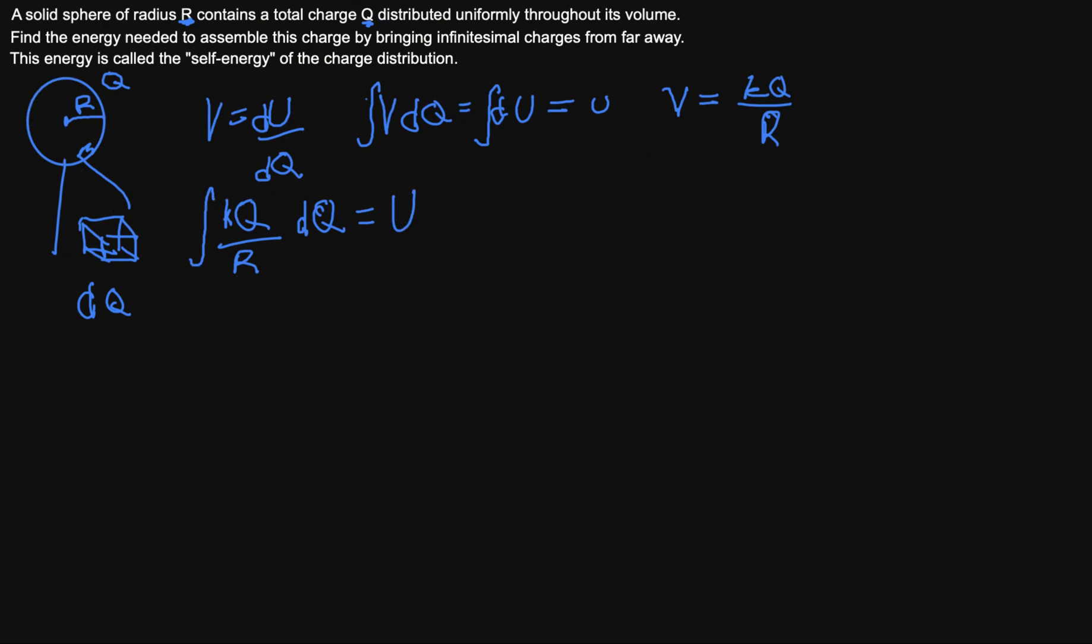So usually in these situations, what we can do is say that the volumetric density, or the surface density, the linear density, in this case, it's volumetric density, which is the charge over the volume. I'll just write vol to differentiate it from this v. We can play around with this to get something to replace our dq. And we know that the volume of a sphere is 4 over 3 pi r cubed, right?